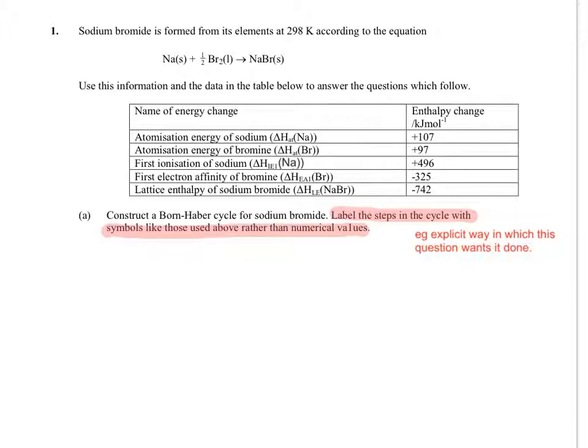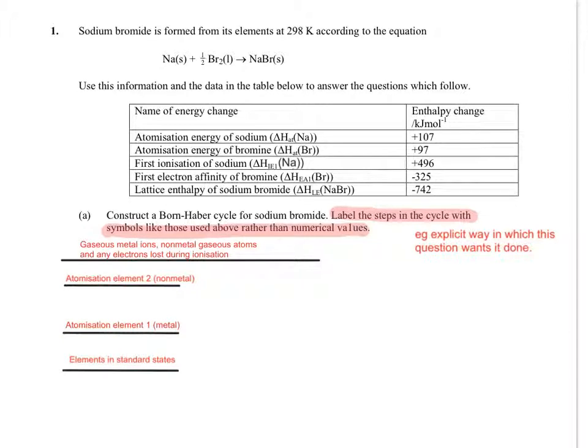So thinking about this, we've got atomisation, we've got first ionisation, we've got electron affinity, we've got lattice enthalpy. So let's have a think about the model of the Born-Haber cycle, and how those different things might fit into it, and in what order. So I always start off with the elements in their standard states. So if we take element 1 to be our metal, in this case sodium, and element 2 could be the non-metal, in this case bromine. You atomise them separately, because each one will carry a specific atomisation energy, or enthalpy.